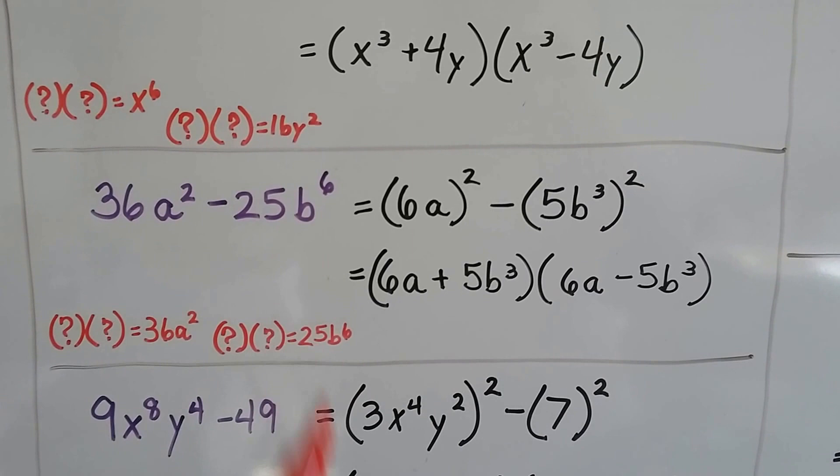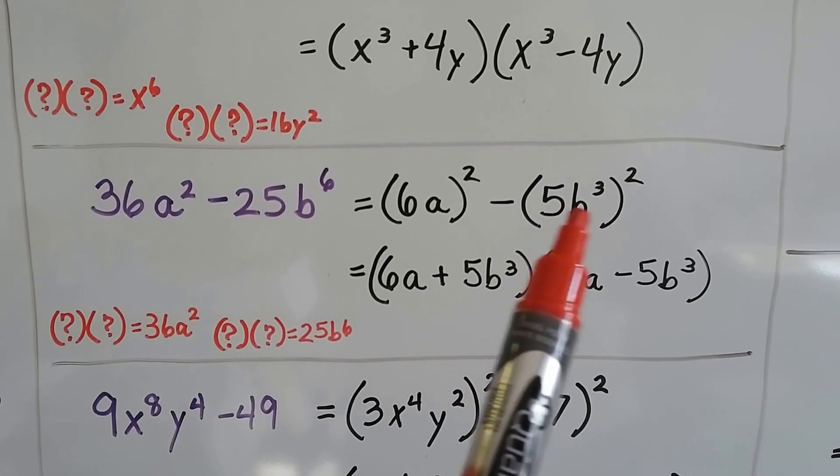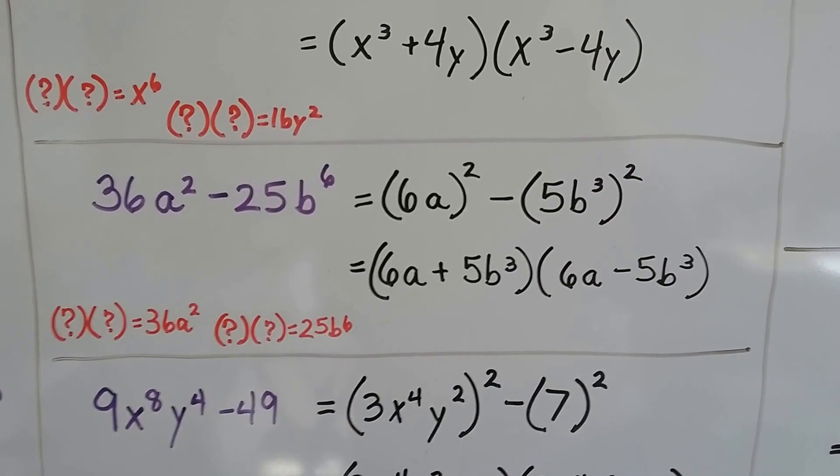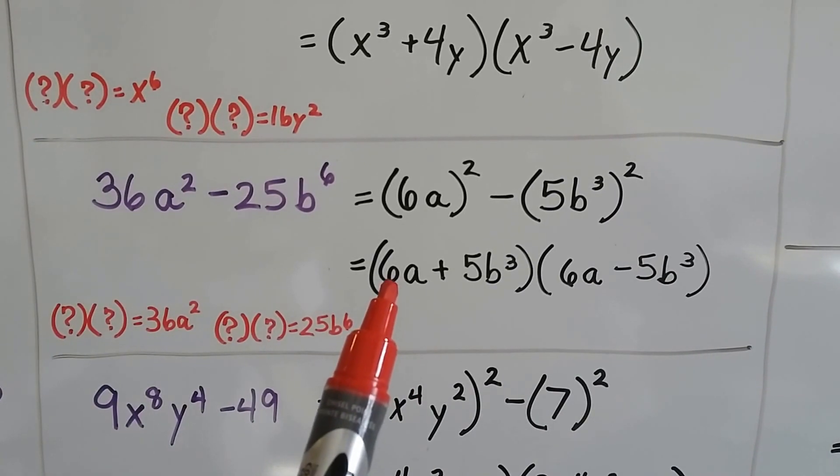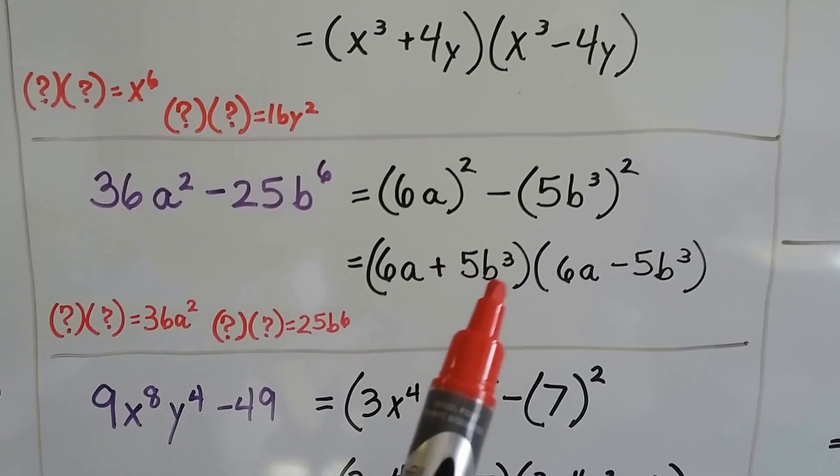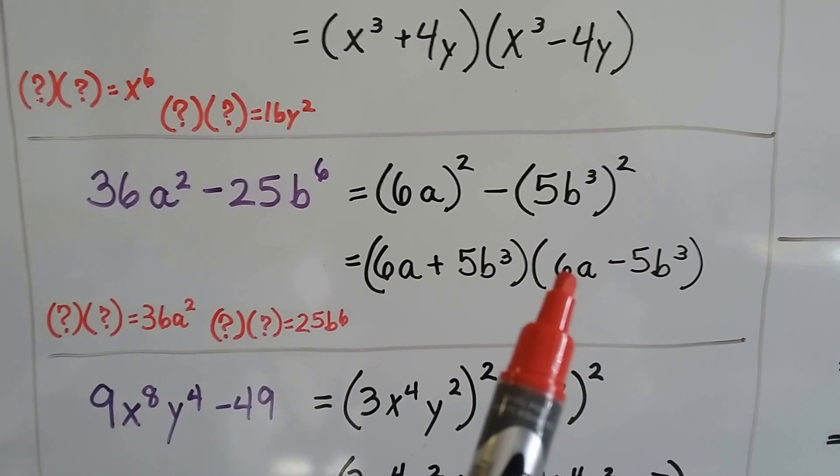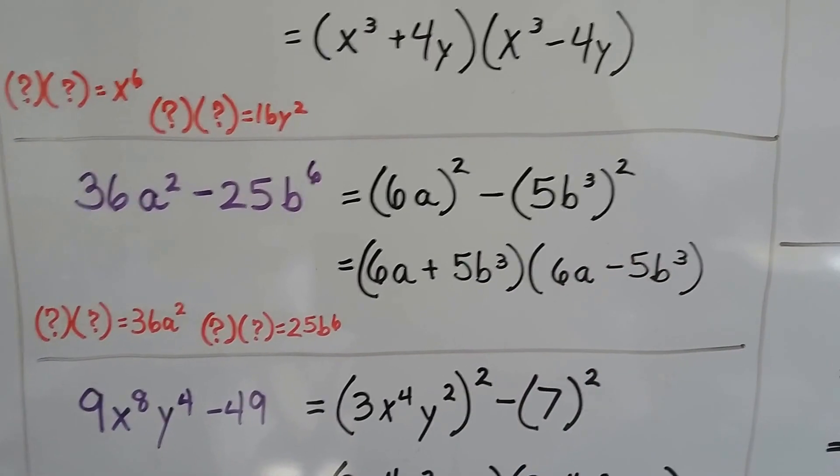And what times what would be 25b^6? Knowing that we add these exponents, it would be 5b³. We would square it. Now we can factor it and open it up as (6a+5b³)(6a-5b³).